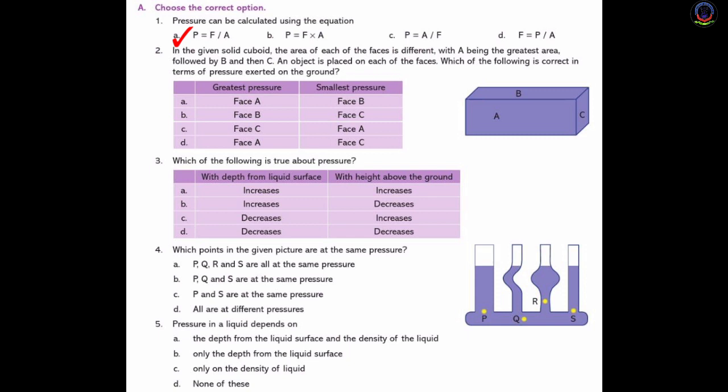Number 2: In the given solid cuboid, the area of each of the faces is different. With A being the greater area followed by B and then C, an object is placed on each of the faces. Which of the following is correct in terms of pressure exerted on the ground? The answer is Option C: face C gives the greatest pressure, followed by face A.